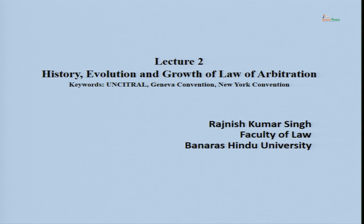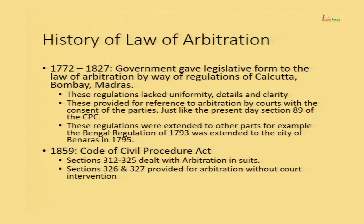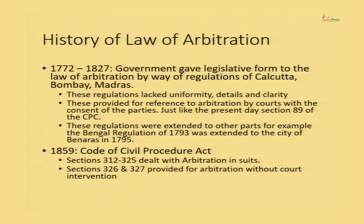This session will form the foundation for the remaining 18 sessions on various aspects of the law of arbitration. The history of the law of arbitration starts from the 1770s — from 1772 to 1827, the government of that time gave legislative form to arbitration by way of regulations. These regulations gave statutory status to the process of arbitration. We had regulations of Calcutta, Madras, and Bombay. This was the beginning of a new thing, so naturally the regulations lacked uniformity, clarity, and detail.